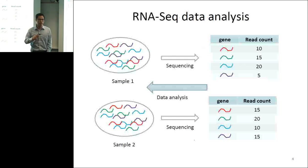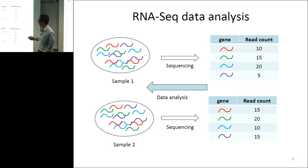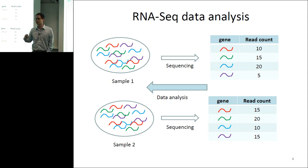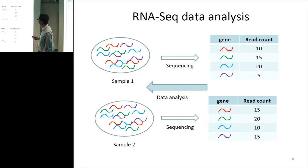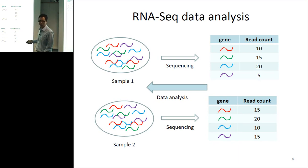This is a cartoon demonstrating the kind of data we get from RNA-seq. We prepare several biological samples from different conditions — one could be control, one could be treated — and we have replicates to control for biological variation. After sample prep, sequencing, mapping the reads, and counting, we get a table with the number of reads per gene per sample. This table has about 25,000 lines because there are 25,000 genes, one table per sample. Our statistical analysis starts from here, trying to make inference on what's going on in the original sample — what genes have changed.